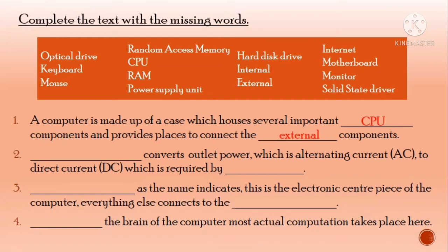Number two, dash converts outlet power, which is alternating current, to direct current, which is required by the CPU. This is called the power supply unit. Number three, dash, as the name indicates, this is the electronic centerpiece of the computer. What is the centerpiece of the computer? Everything else connects to the motherboard.